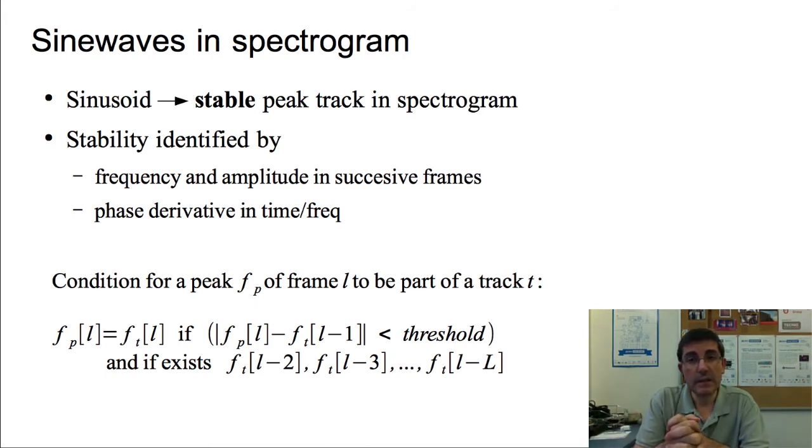We have to deal with spectrograms and find time-varying sinusoids. We will define time-varying sinusoids as a stable peak track in the spectrogram. This variability will be constrained, and we will define peaks that evolve in time, that sort of move in time, but not so much. This stability will be measured by the frequency and amplitude of successive frames. We could also look at the phase derivative in time-frequency for that. In practice, we are going to focus on the frequency and amplitude variability, but the phase is also a very interesting value to look at.